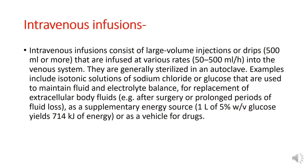Intravenous infusions consist of large volume injections or drips that are infused at various rates — 50 to 500 ml per hour — into the venous system. They are generally sterilized in an autoclave. Examples include isotonic solutions of sodium chloride or glucose used to maintain fluid and electrolyte balance, for replacement of extracellular body fluids, and as a supplementary energy source — one liter of 5% weight by volume glucose provides 714 kJ of energy, and as a vehicle for drugs.